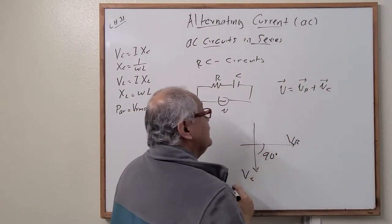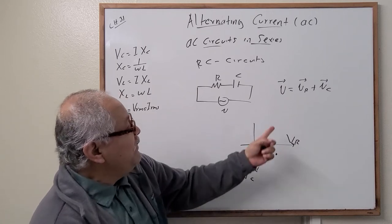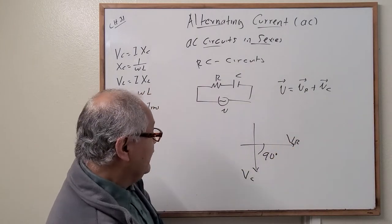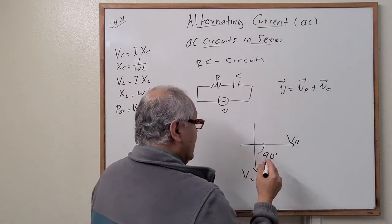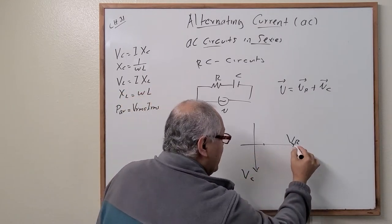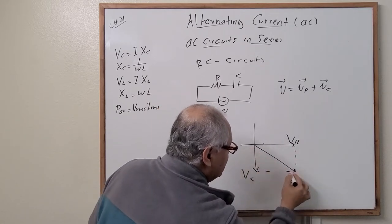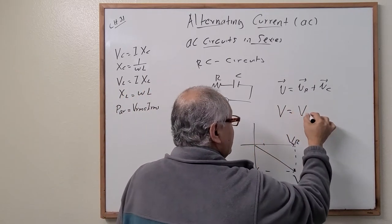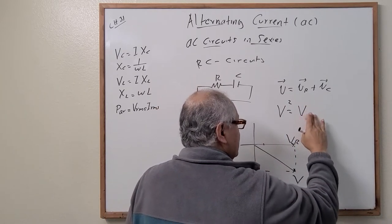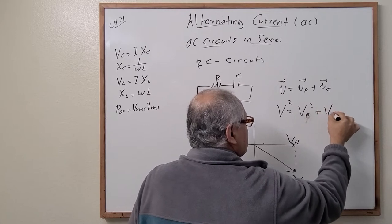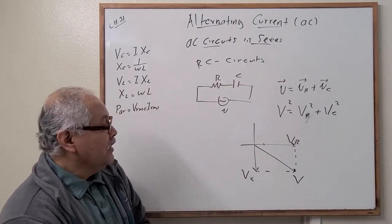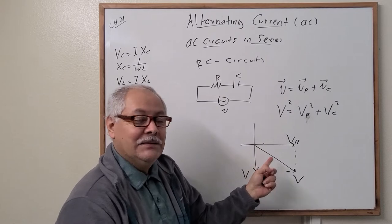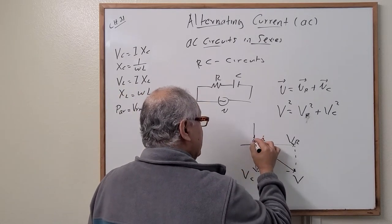We can make the relationship correct if we treat these voltages as vectors. In this way, the condition is valid when dealing with magnitudes. Using the Pythagorean theorem, we can find the total voltage: it equals the square root of the voltage across the resistor squared plus the voltage across the capacitor squared. We take the resistor voltage direction as i-hat and the capacitor voltage direction as j-hat.